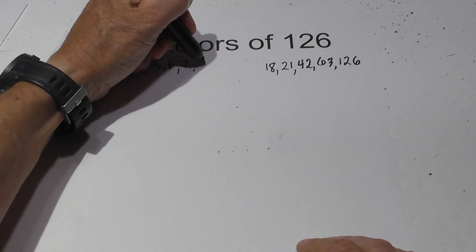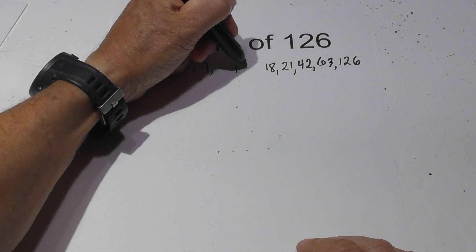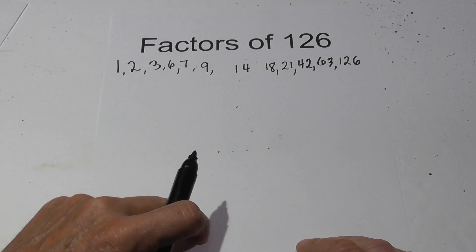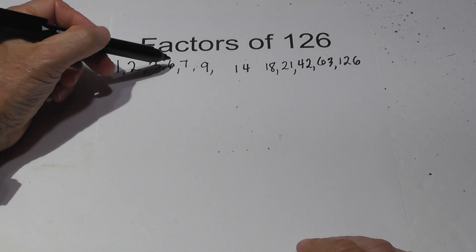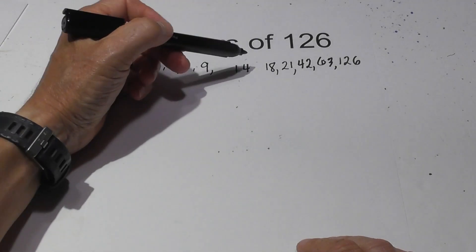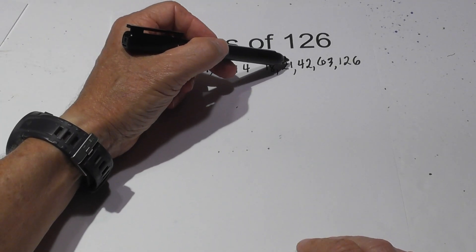So the factors of 126 are 1, 2, 3, 6, 7, 9, 14, 18, 21, 42, 63, and 126.